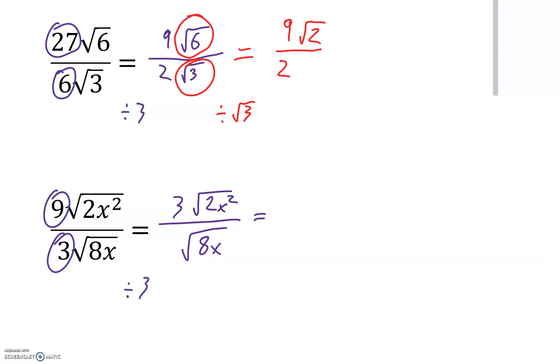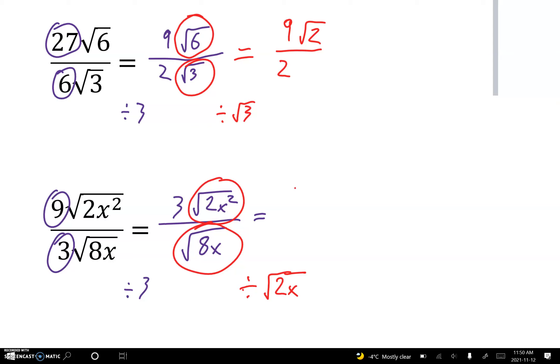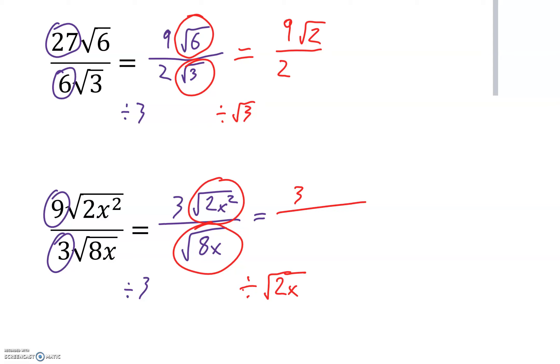Now we can look at the radicals to see if there's anything we can divide by in both places. Yes there is. We can divide by root 2x in both places. That gives us 3 over 2, root x on top and root 4 on the bottom.